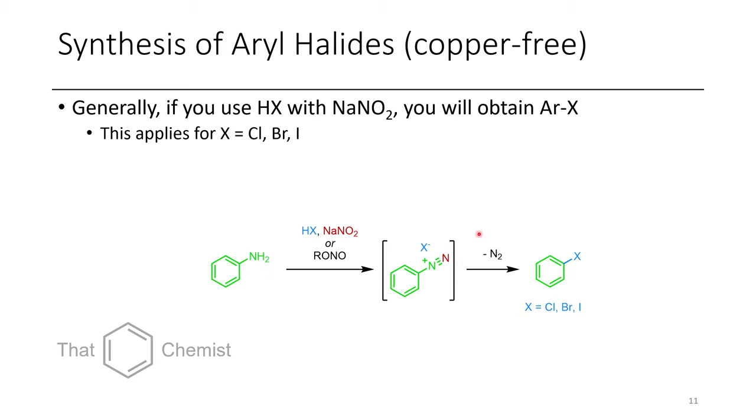So if you wanted to just form these in situ, and then trap them out, you can just add an HX, where X could be bromide or iodide or chloride. However, if you want to make a chloride or a bromide, you typically need to add in a copper salt, whereas iodides don't need a copper salt. Iodide is nucleophilic enough that it can do this SNAr substitution reaction very easily.